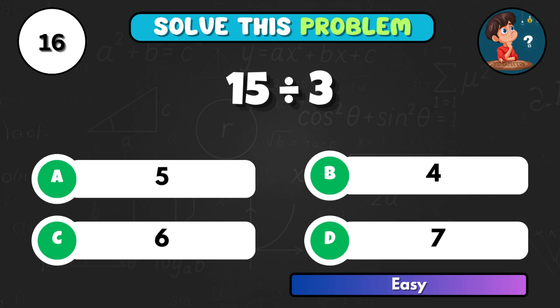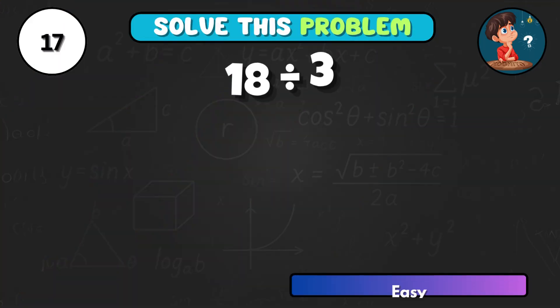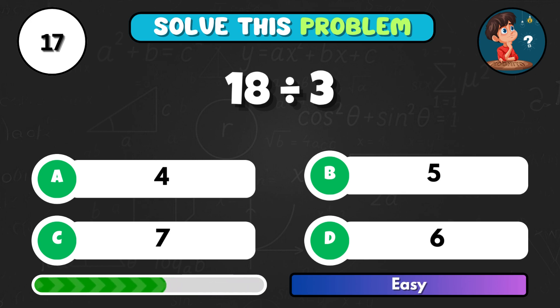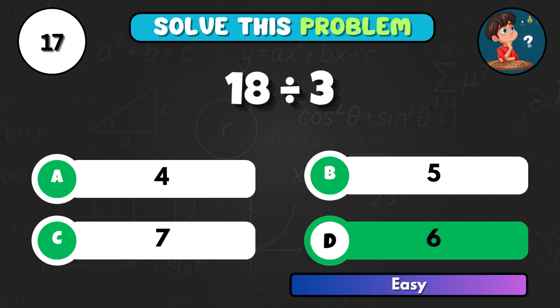15 shared among 3, what's the result? Option A, that's 5. 18 divided by 3, what's your answer? Correct choice D equals 6.